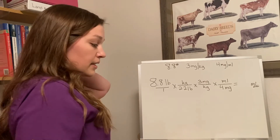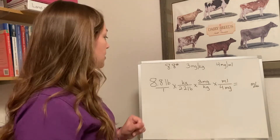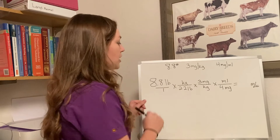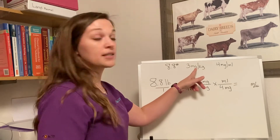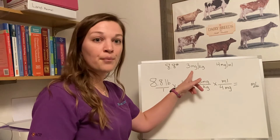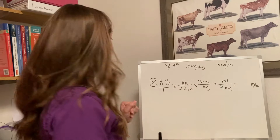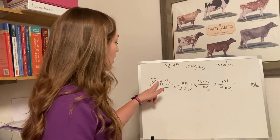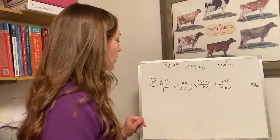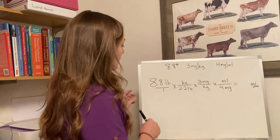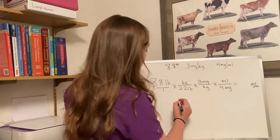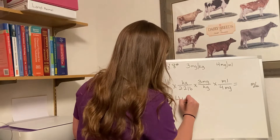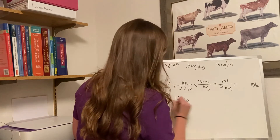Let's get started. We want to first make sure we can convert our patient's weight into kilograms so we can figure out how many milligrams we need to give them. We take 8.8 and divide it by 2.2 — so 8.8 divided by 2.2 tells us that our patient is 4 kilograms.